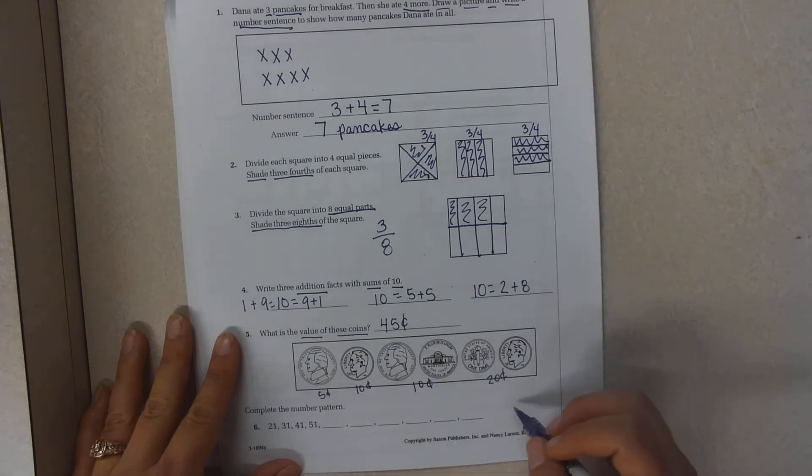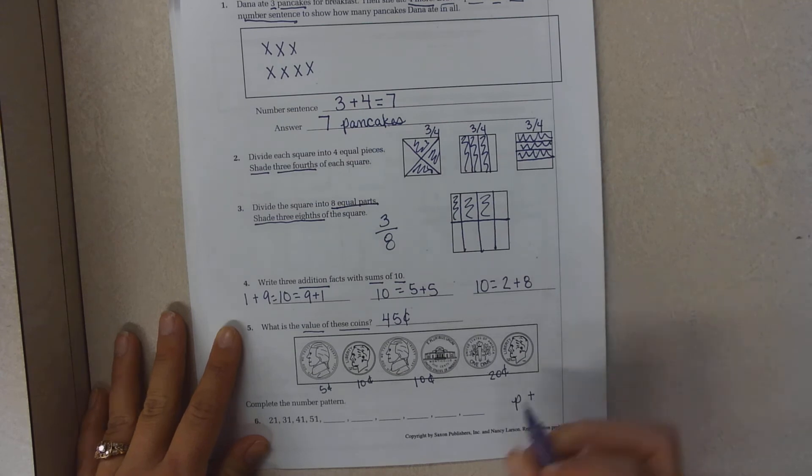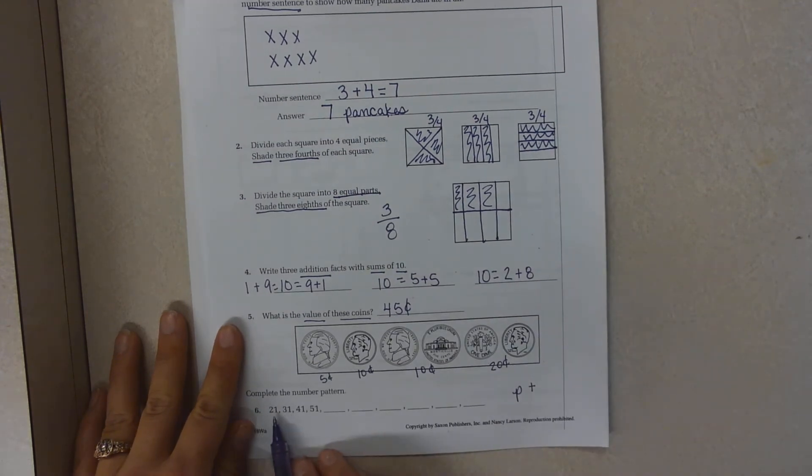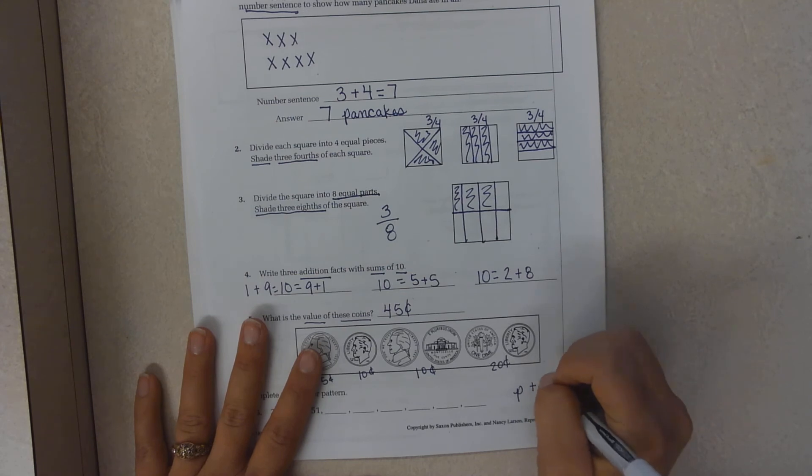Complete the number pattern. My pattern is going to be getting larger. And the difference between 31 and 21 is 10. Between 41 and 31 is 10. 51 and 41 is 10. So my pattern is plus 10.